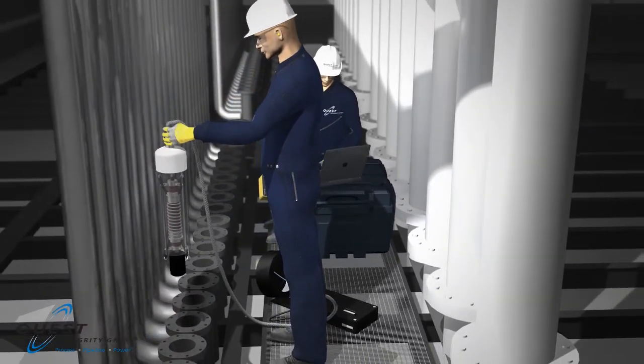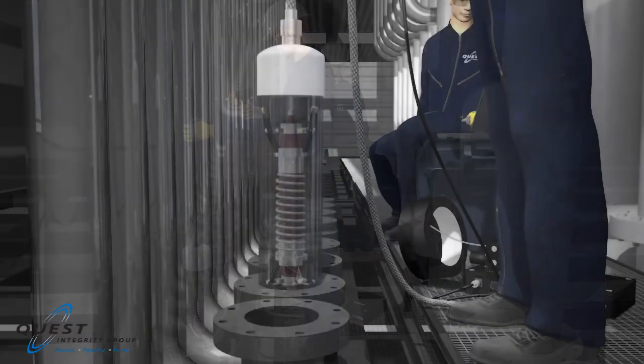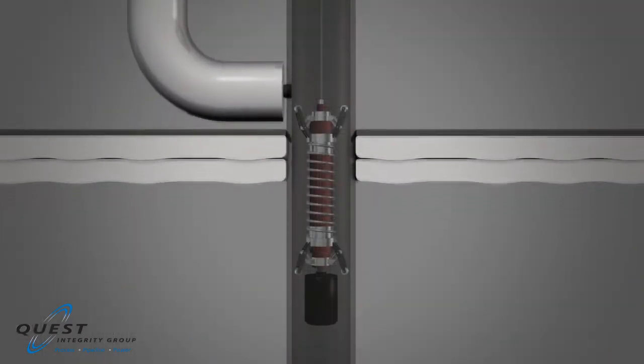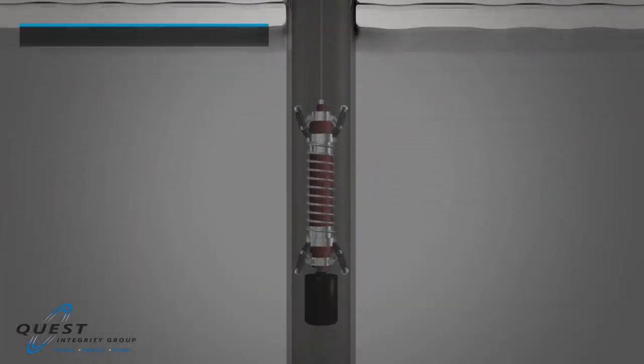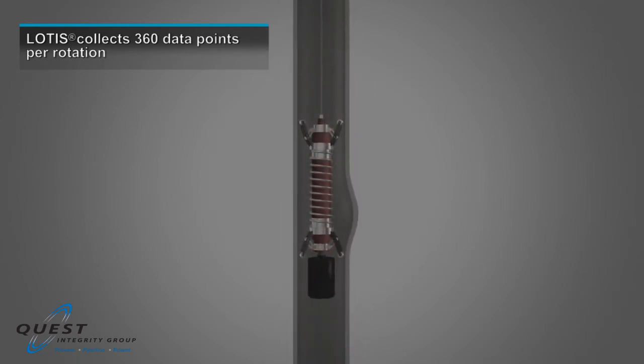The inspection starts from the top of each tube, following catalyst removal. The LOTUS laser probe is inserted into each catalyst tube and driven to the bottom. During the inspection, the probe head spins at a rate of 1800 RPM and collects 360 inspection data points per rotation.